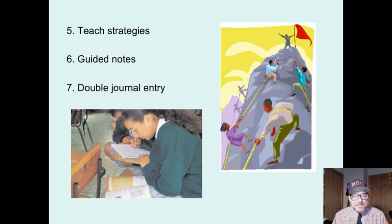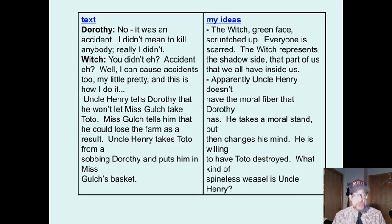I'm going to look at guided notes and double journal entry. Double journal entry is where as you're reading, you take notes exactly on what is in the text on one side, and on this side is the subjective area—what you think about it. This side is the objective, this side is the subjective. If you are in class, these are the notes you are hearing from the professor. This is your ideas or what you think about it.